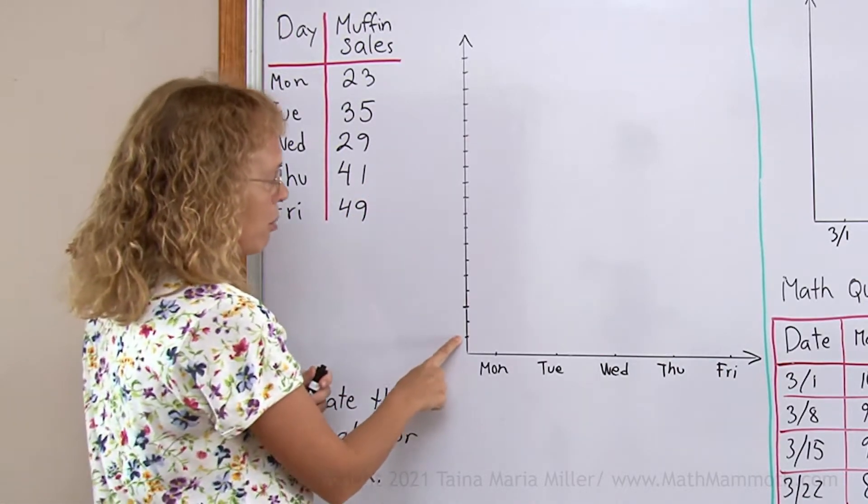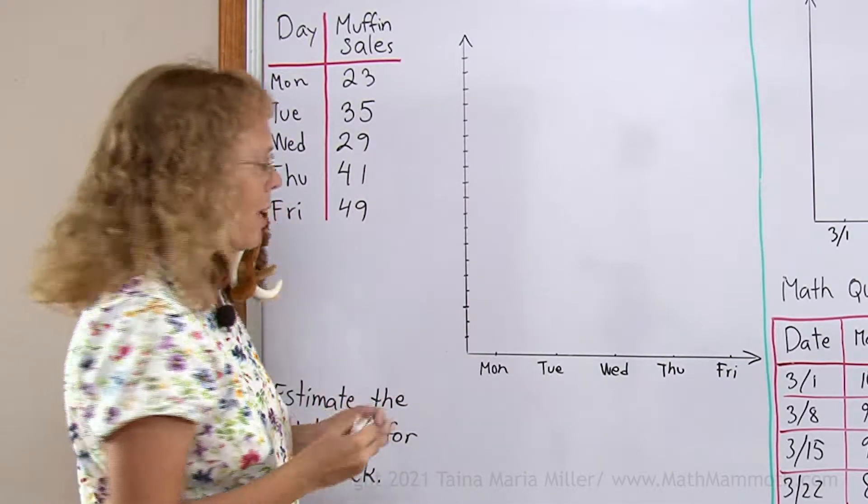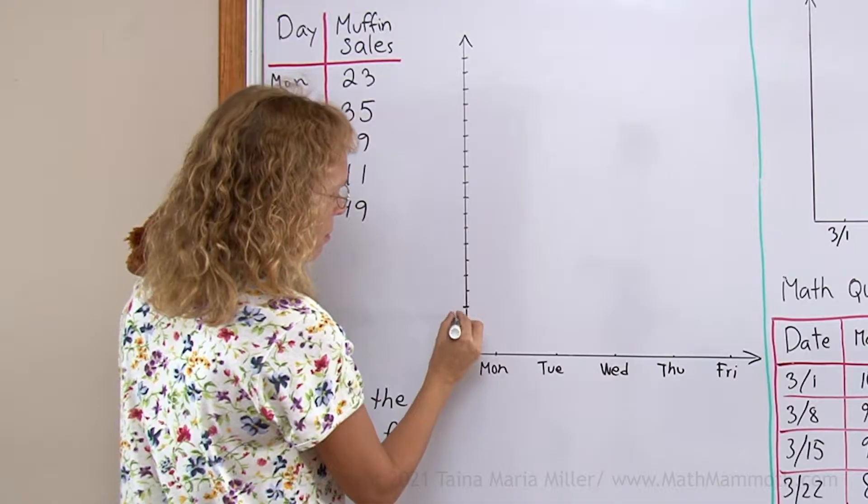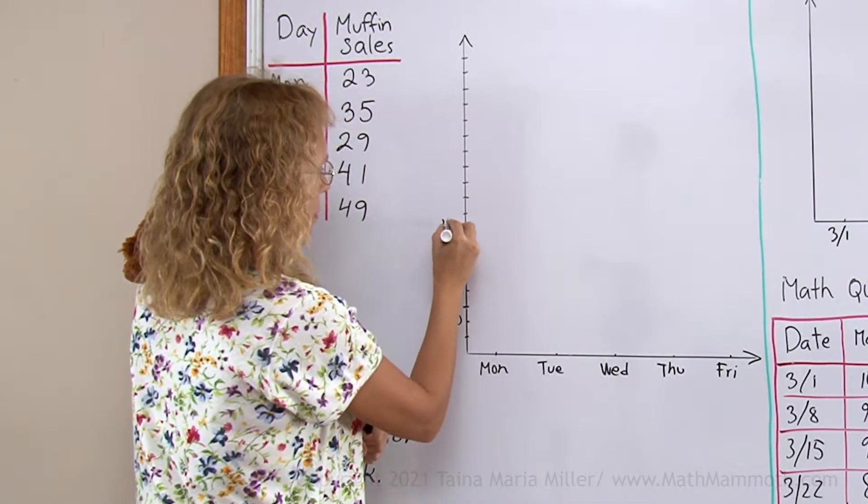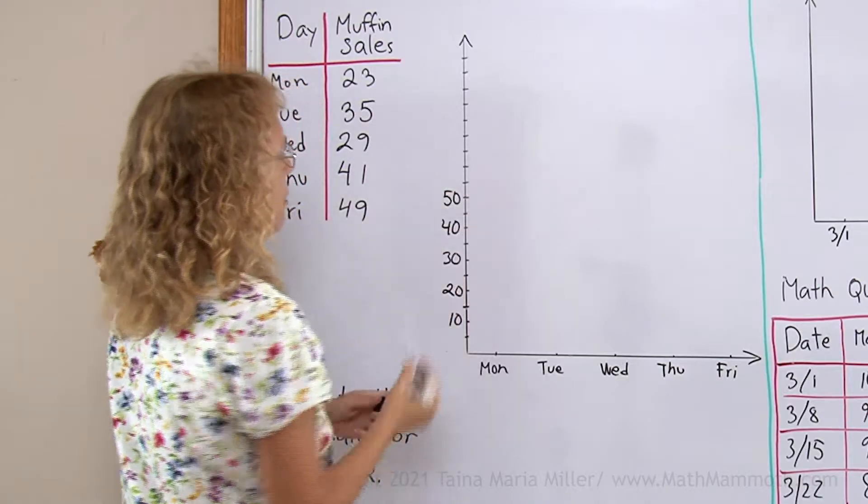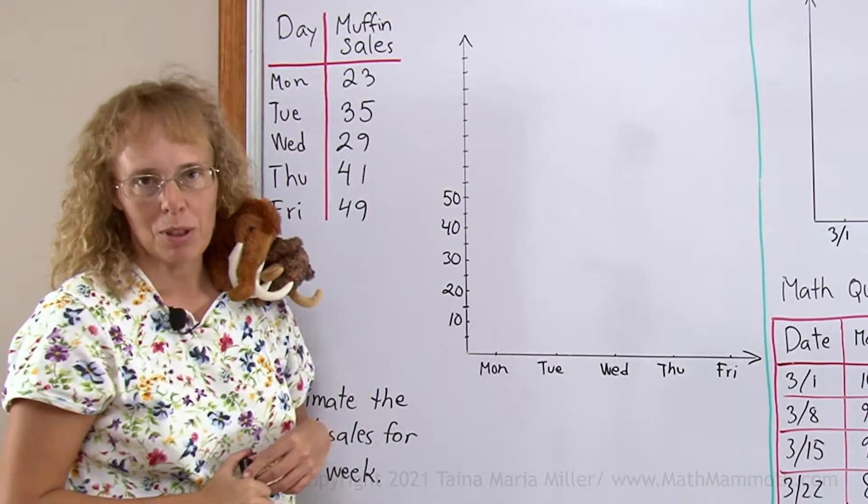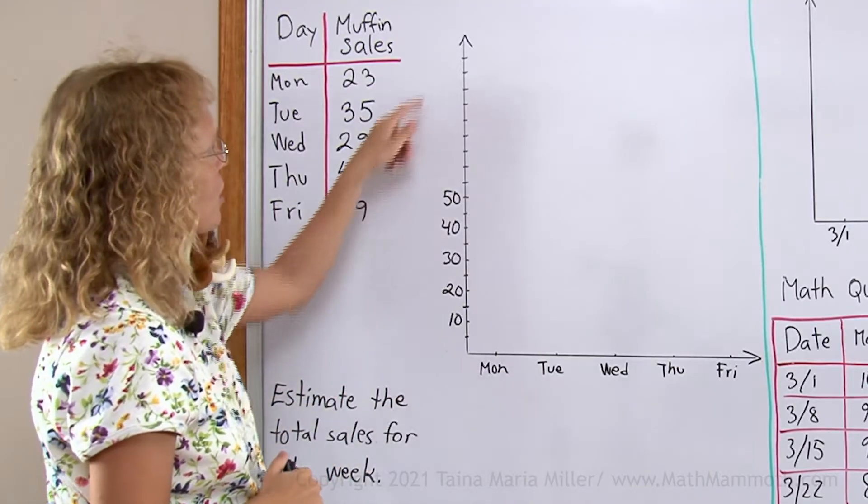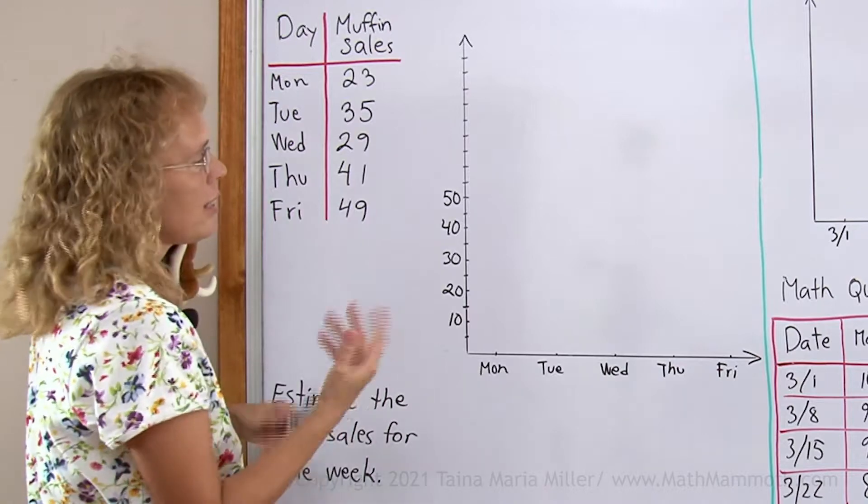And so, let's say if I put 5, 10, 15, 20, that should about work. So, 10 here, 20, 30, 40, and 50. That will work. It would also work to have it double as much, because I could have 4 of those tick marks to be 10. But let's try this.